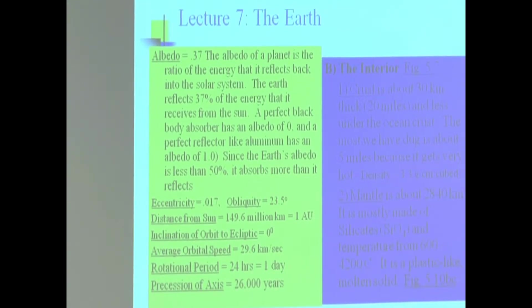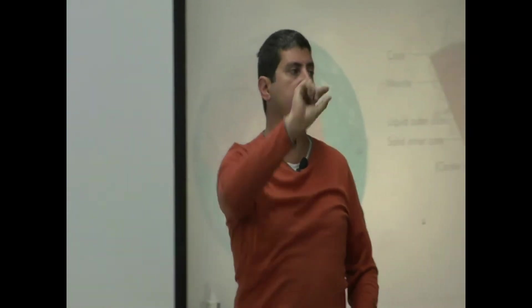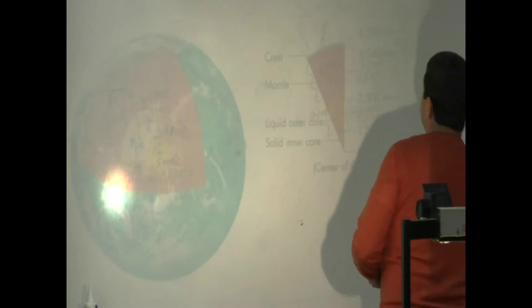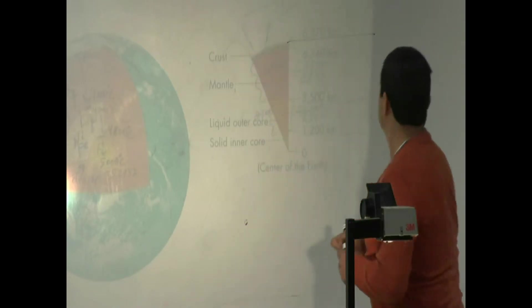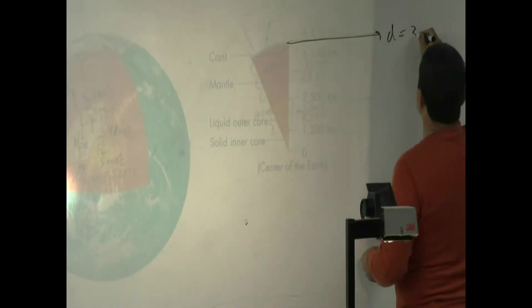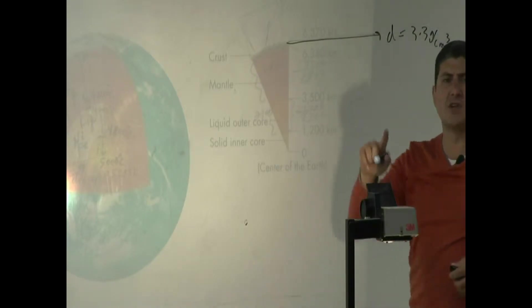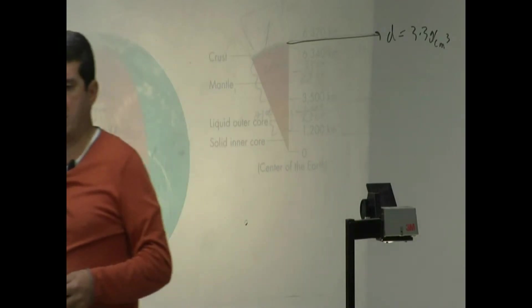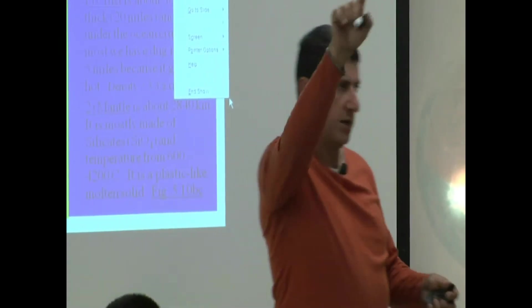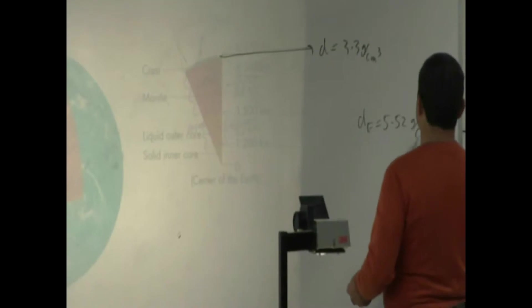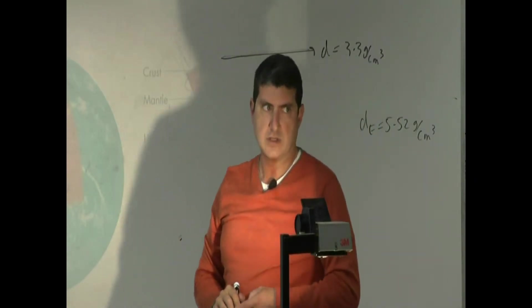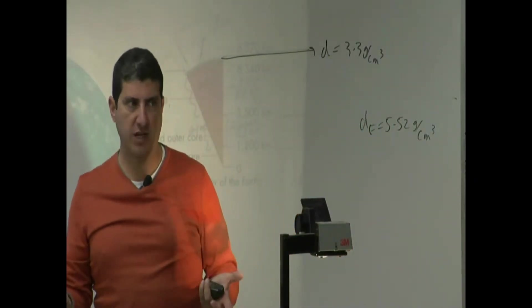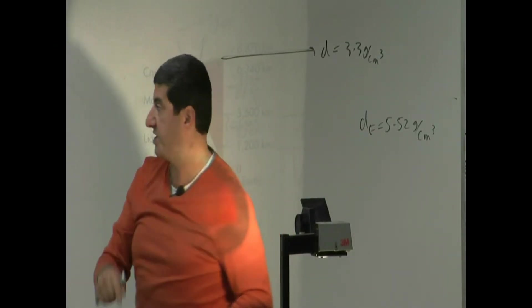The density, if you just took the crust by itself, is 3.3 grams per cubic centimeter. What did we say was the overall density of the earth? 5.52. The density of the crust is 3.3, that means the crust is more rocky. The density of rock is more around 3. Now, as you go down, the density is going to start increasing.